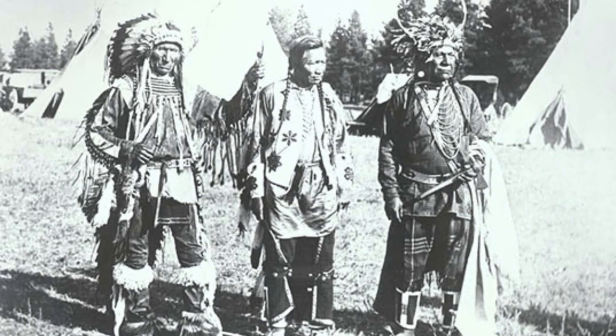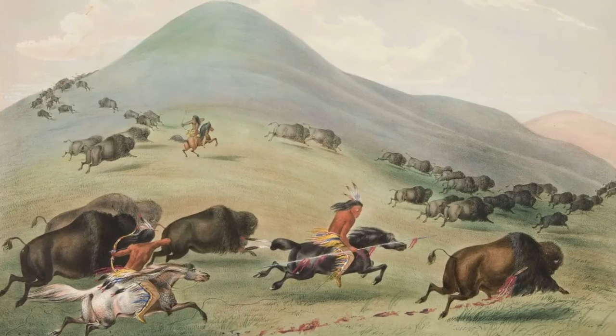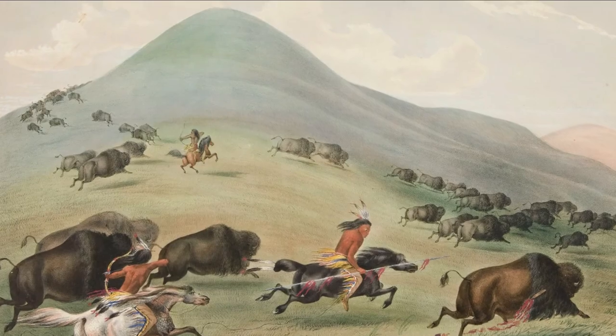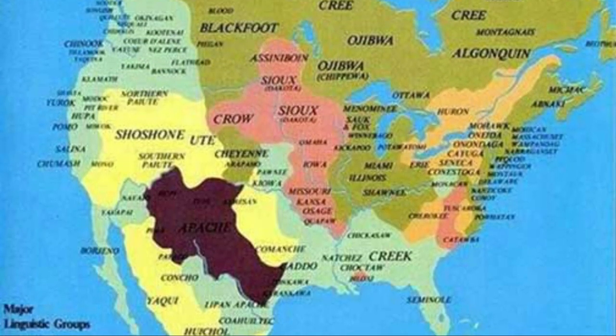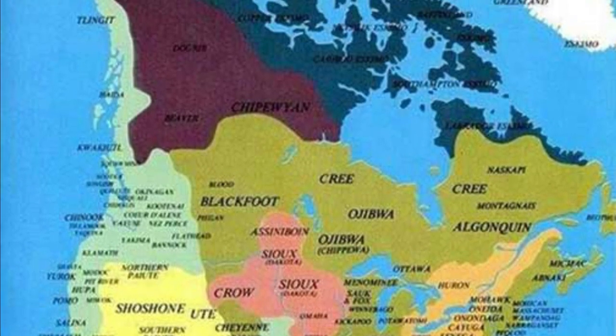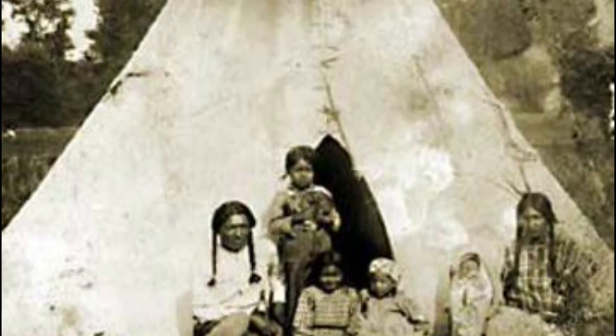California: Over 100 Native American tribes once lived there. They fished, hunted small game, and gathered acorns, which were pounded into a mushy meal. The Plateau: The Plateau Native Americans lived in the area between the Cascade Mountains and the Rocky Mountains. To protect themselves from the cold weather, many built homes that were partly underground.